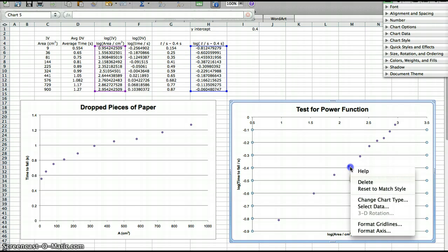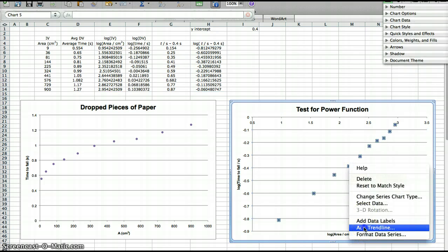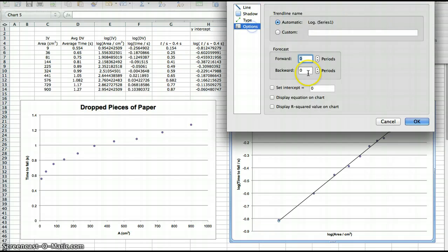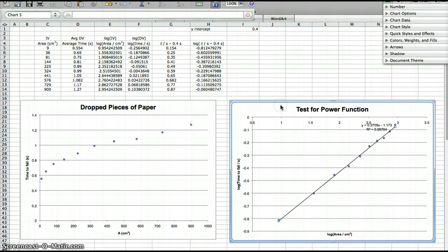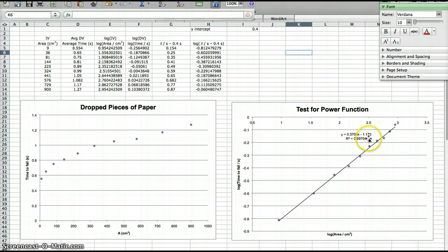Wow. Look at that. Oh my gosh. Let's add a trend line and see how good we did. Display equation, r-squared value. That is just beautiful. Look at how straight that line is. And here's the really cool thing.